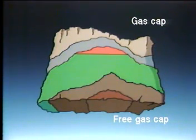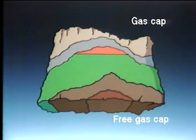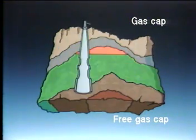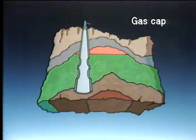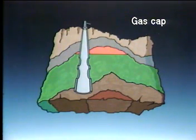A gas cap will be present in a reservoir if the reservoir oil is below its bubble point at the time of discovery. The larger the gas cap volume relative to the oil volume, the more effective the gas cap will be in maintaining pressure.